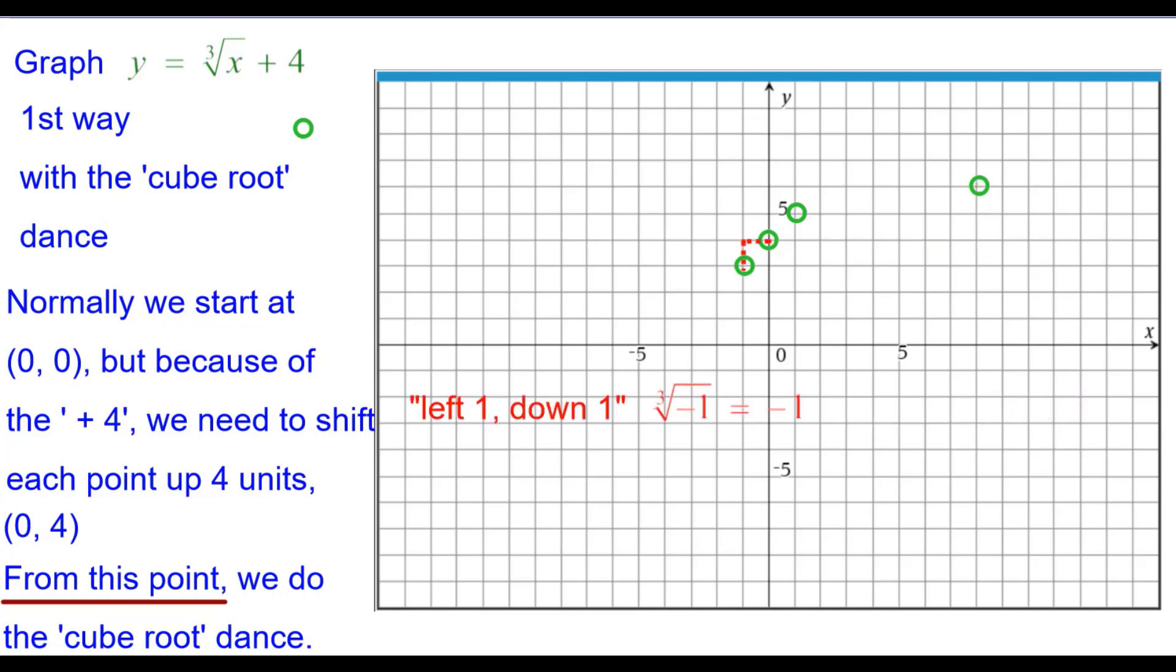And going in the negative direction, left 1 down 1, the cube root of negative 1 is negative 1. And from that point, left 8 down 2, the cube root of negative 8 is negative 2.